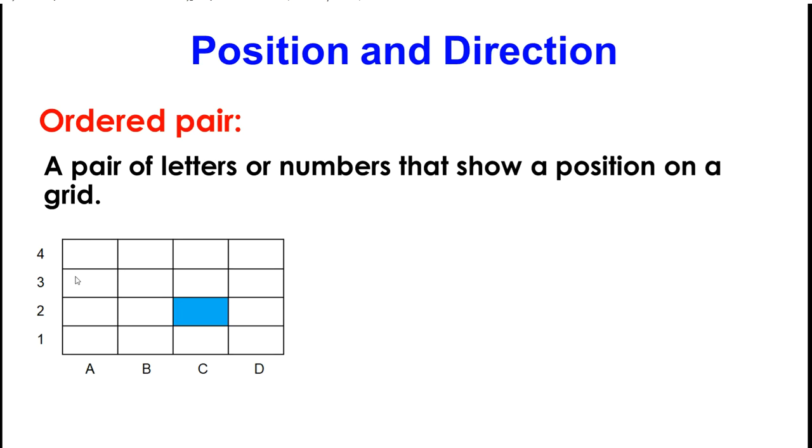Here's my grid. And I'm wanting to find the ordered pair of this blue square. Well, it's on C. And it is also here if I go up 1, 2. So my ordered pair is C, 2.